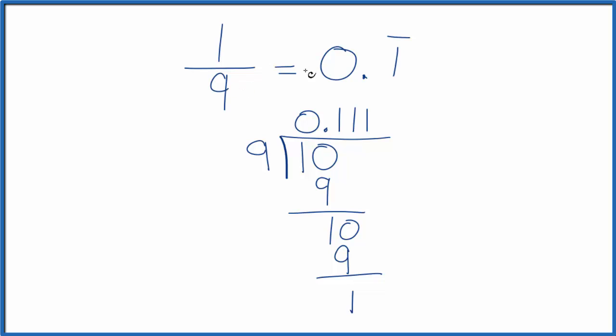So 1 ninth as a decimal is 0.1111. And we can show that as 0.1 with the bar over it to show that it's repeating.